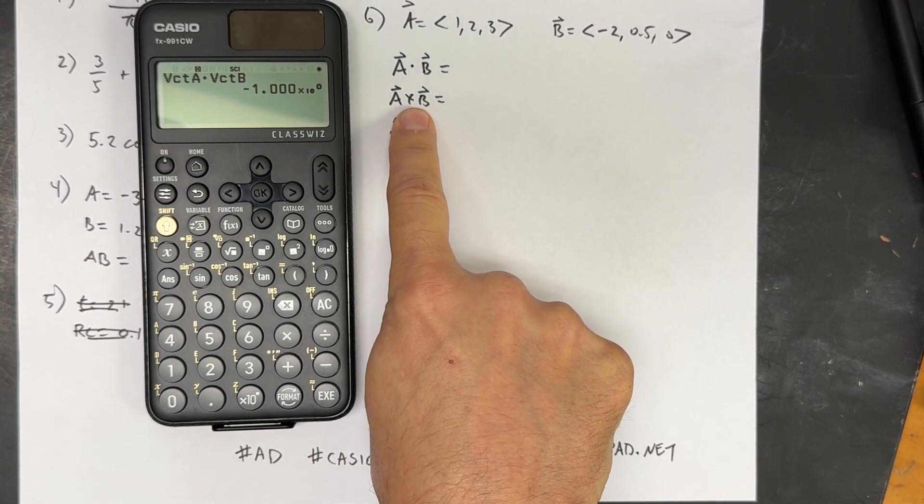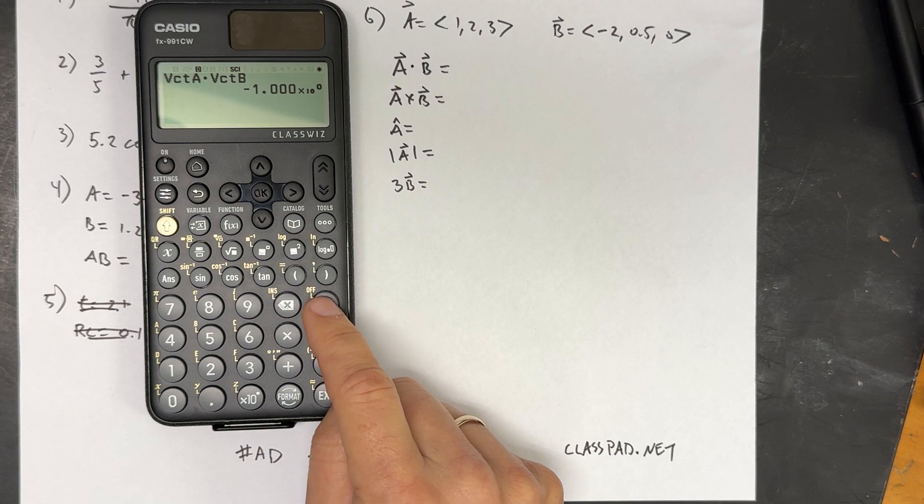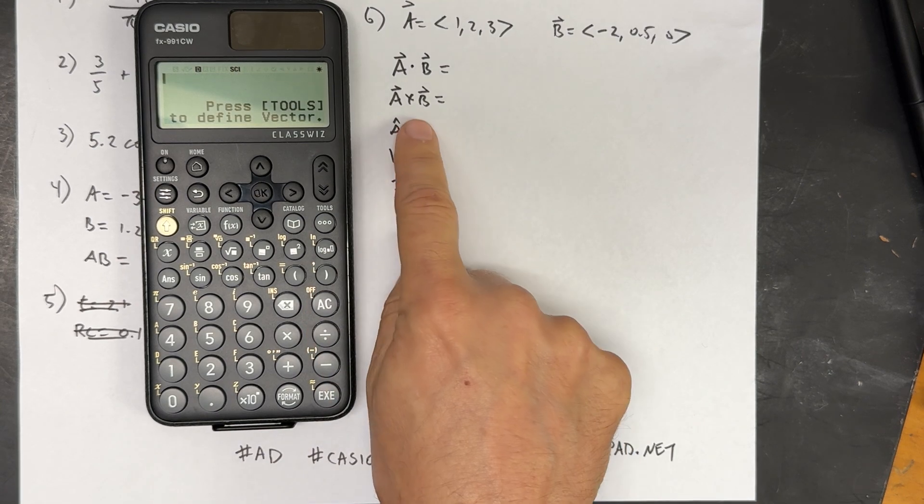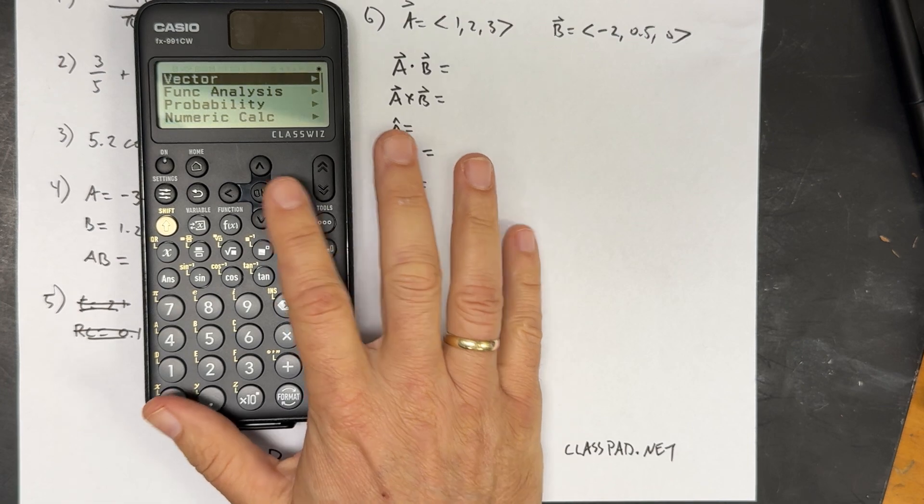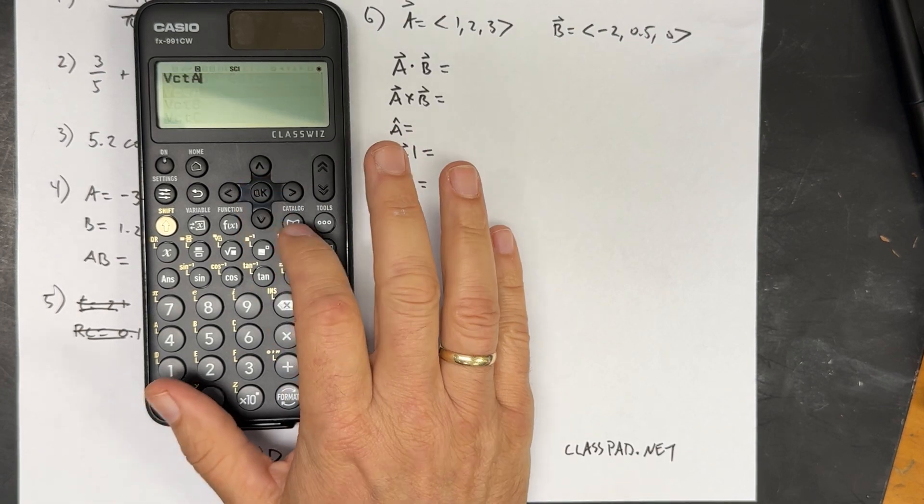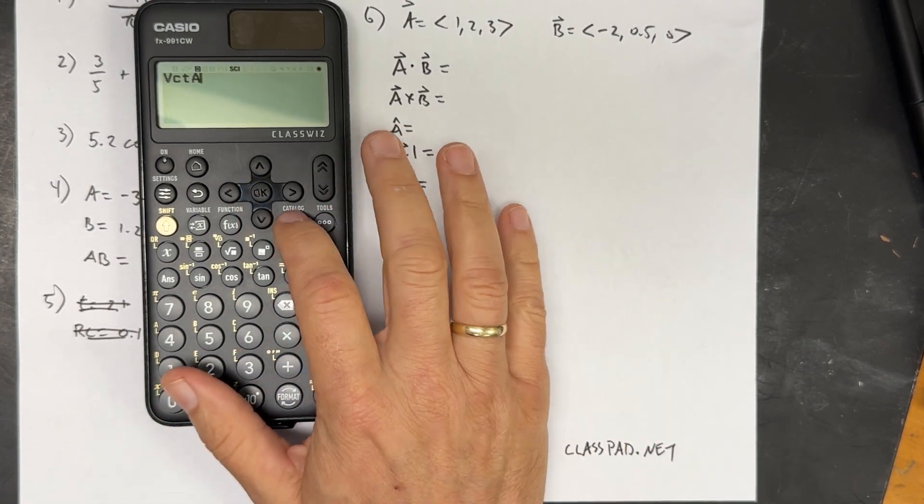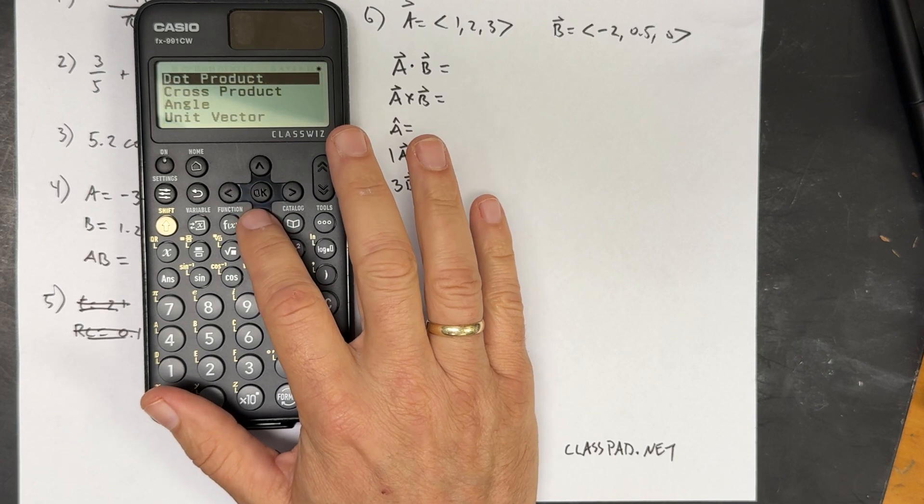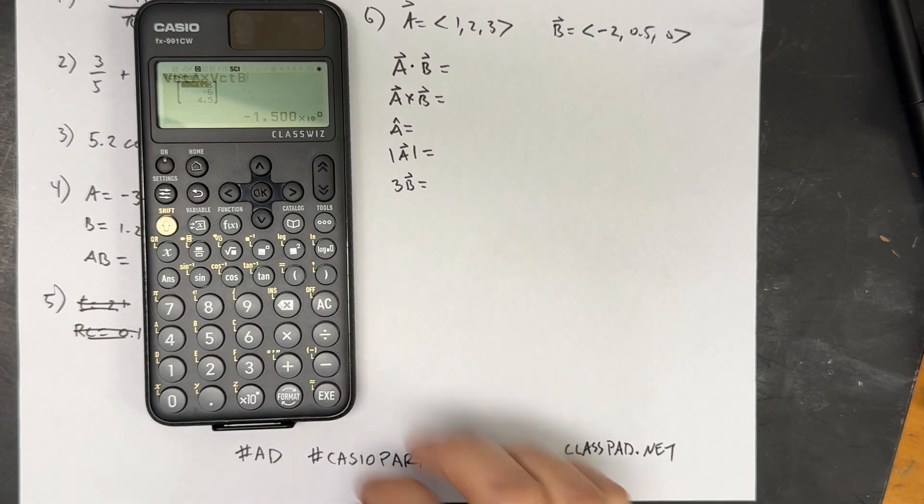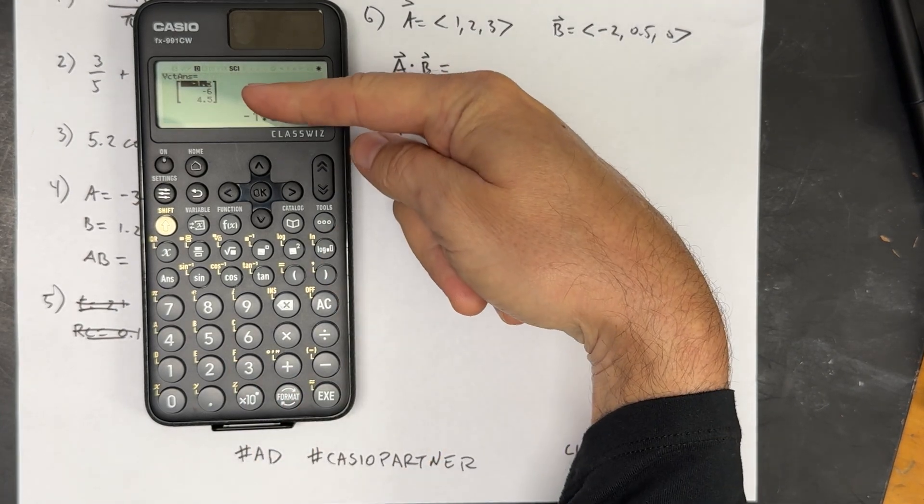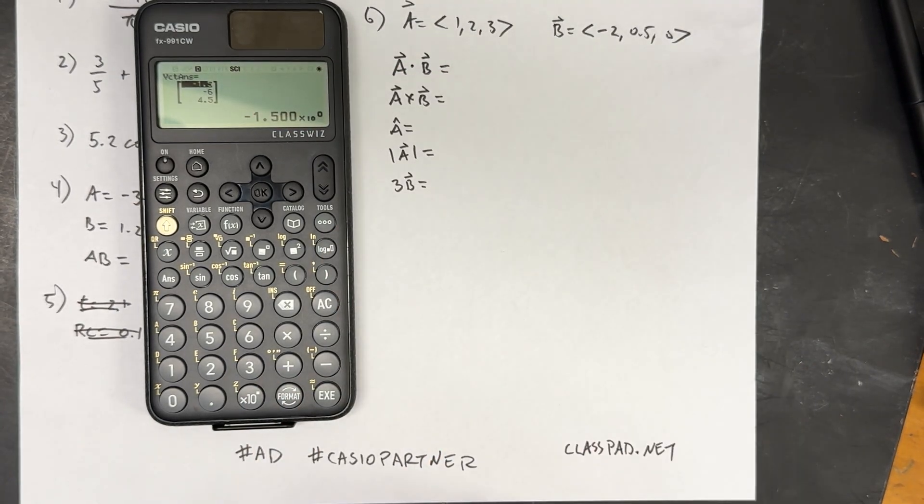Next, we're going to do the cross product. So I'm going to clear that. And I need A cross B. So again, I need to pull vector A. Catalog, vector, vector A. Now I need the cross product. Catalog, vector, vector calc, cross product. And then catalog, vector, B. Execute. And you'll see here that it does indeed give me a vector answer. It's a vector answer for the cross product.